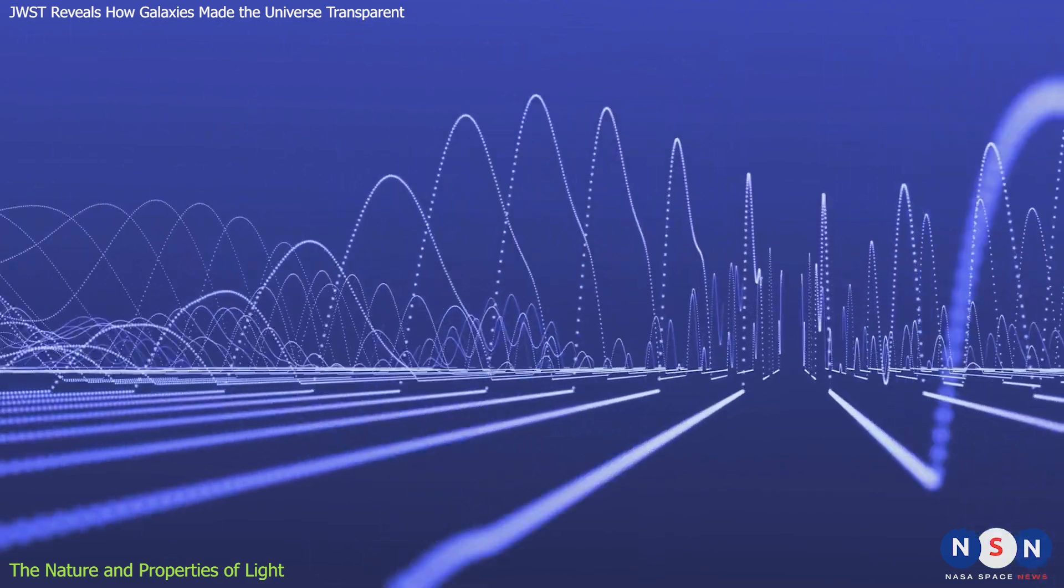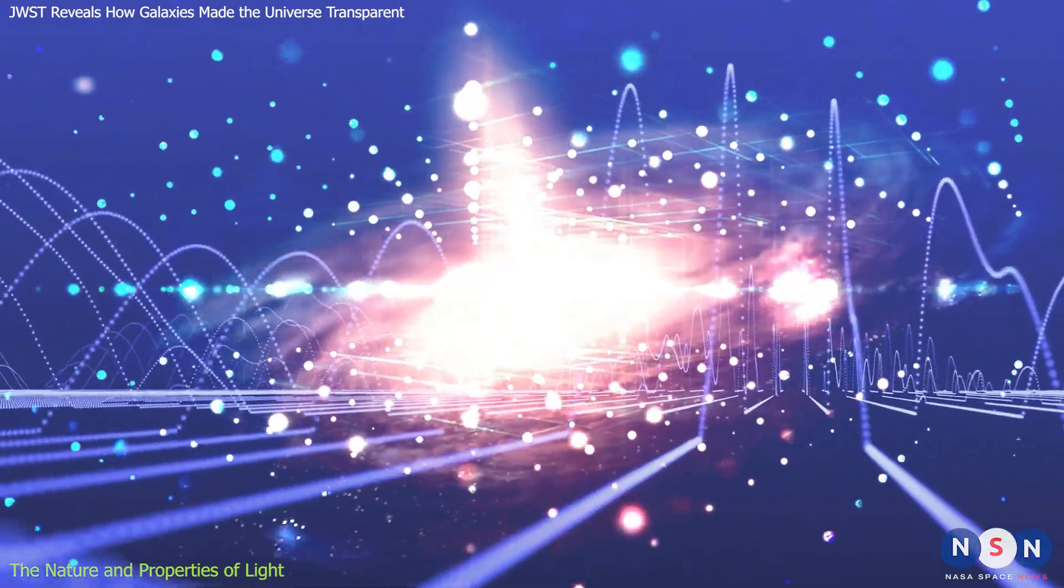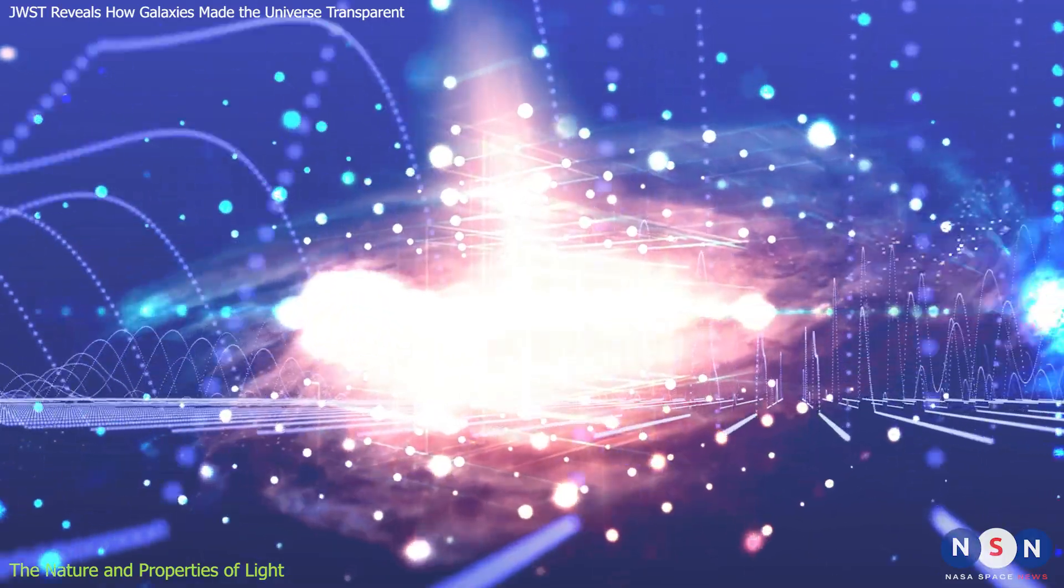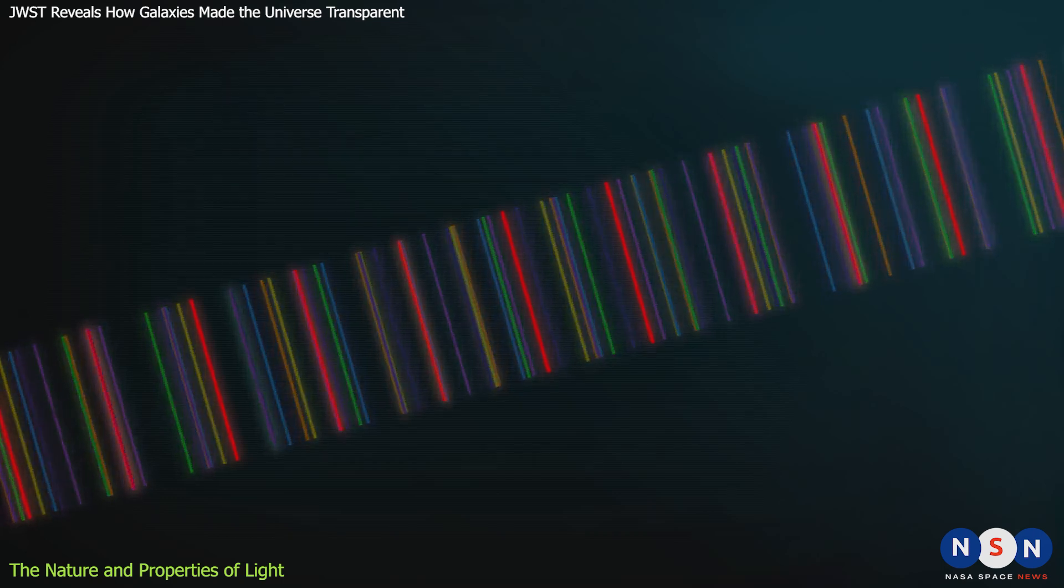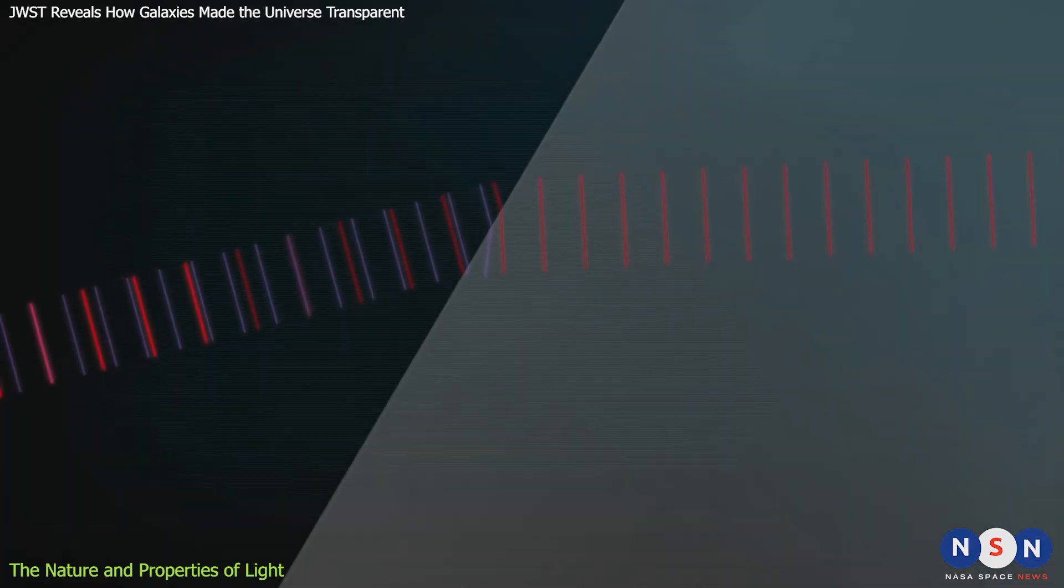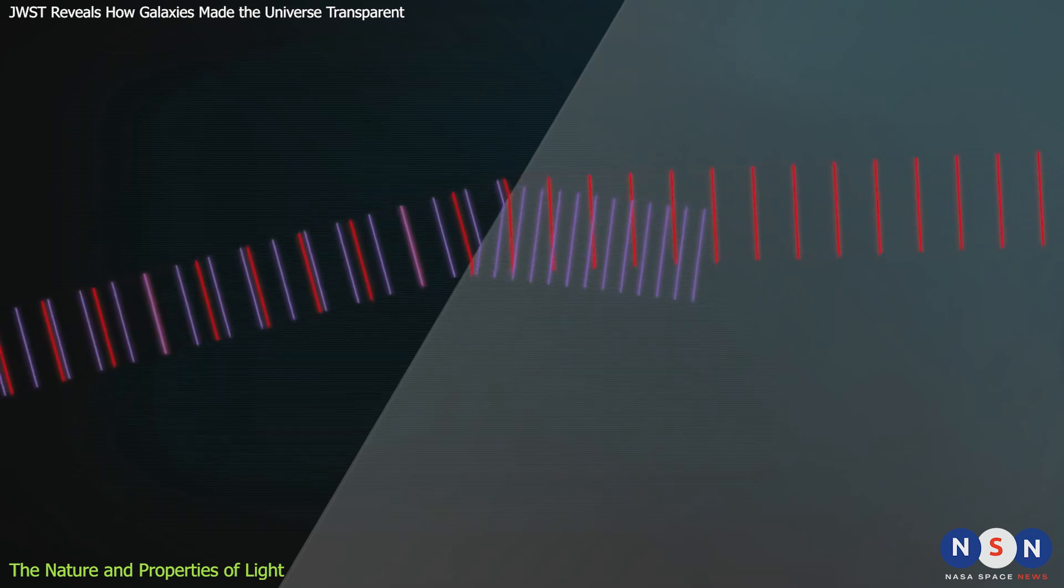One of these concepts is wavelength, which is the distance between two consecutive peaks or troughs of a wave. Wavelength determines the color and energy of light. For example, red light has a longer wavelength and lower energy than blue light, which has a shorter wavelength and higher energy.